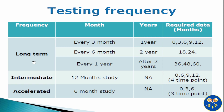The long term stability studies shall cover the entire retest period or shelf life under the recommended storage condition. The testing frequencies for long term stability studies should be normally every 3 months for the first year, i.e. 0 month, 3 month, 6 month, 9 month and 12 month. Then every 6 months for the second year, i.e. 18 month and 24 month, and then every year till the proposed shelf life, i.e. 36 month, 48 month and 60 month.